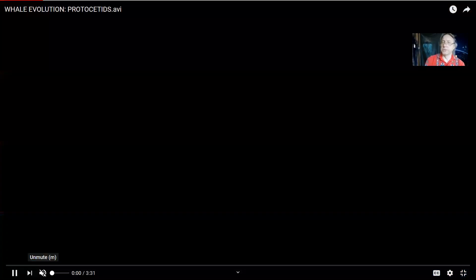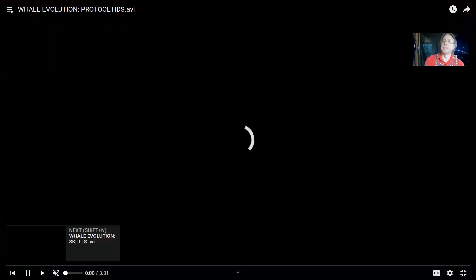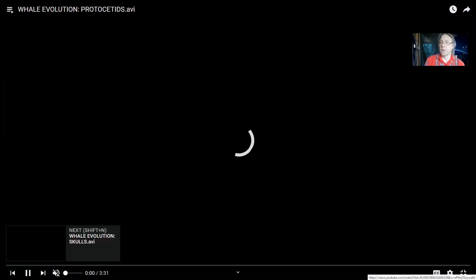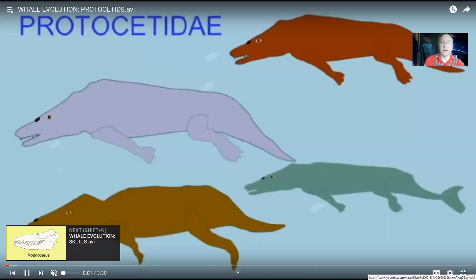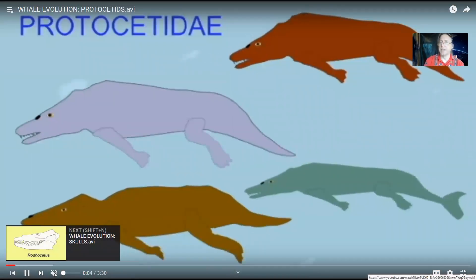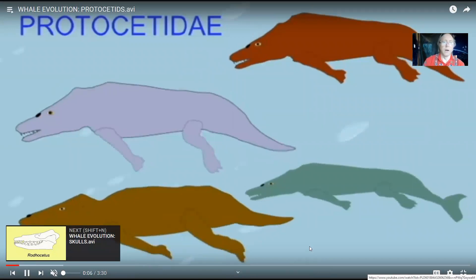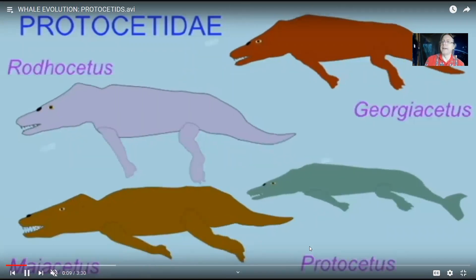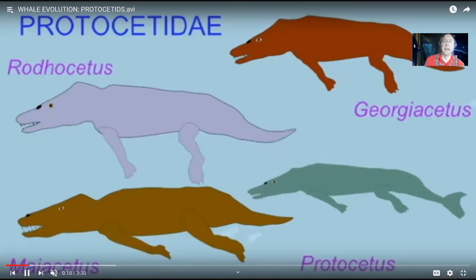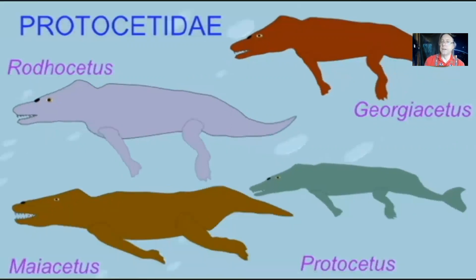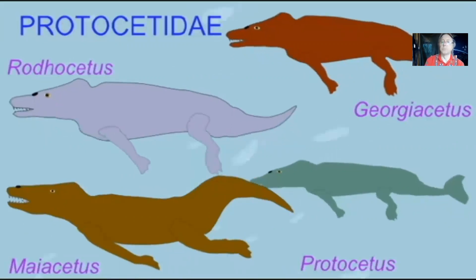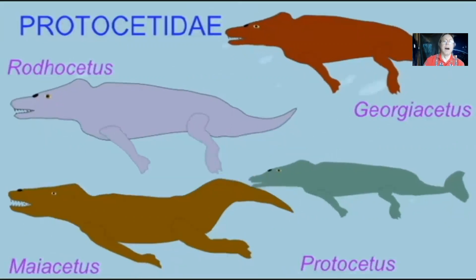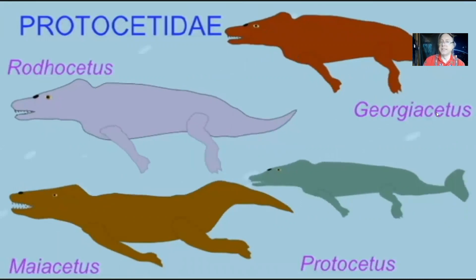They were predators, just like those aquatic reptiles were good at eating fish and other marine life. After forms like Ambulocetus, there was a family with a number of early whales. All of these whales had both arms and legs, including Rhodocetus and Georgiacetus.